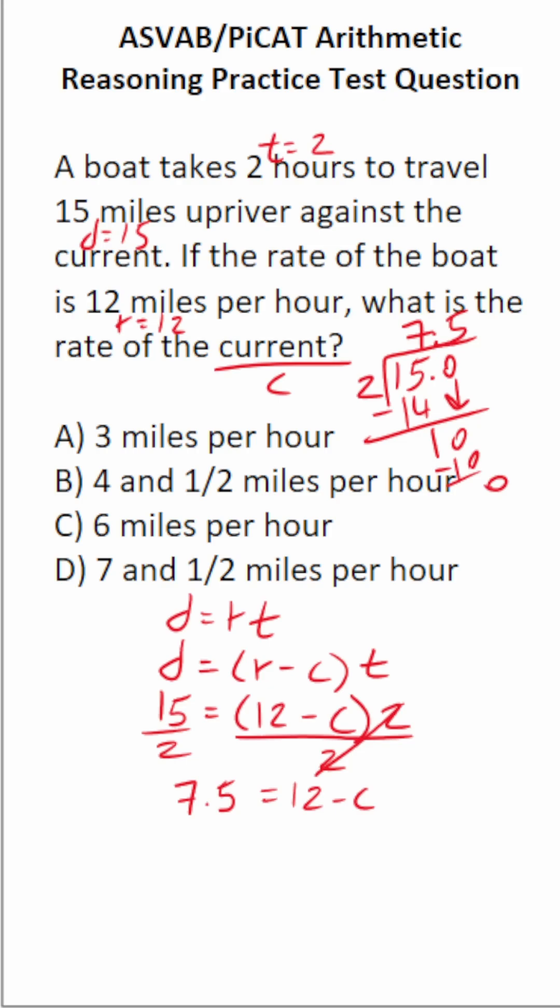Now to solve for C, the next thing we're going to do is subtract 12 from both sides of the equation. This crosses out, leaving you with negative C on this side. What is 7.5 minus 12? Well, that's the same thing as 12 minus 7.5, but we know our answer is going to be negative.